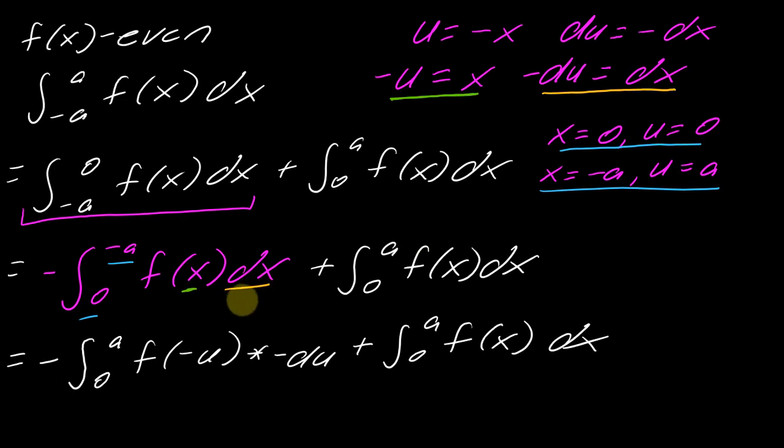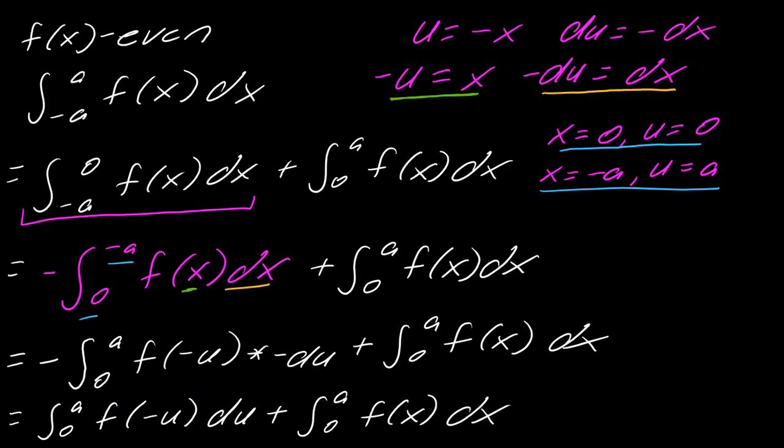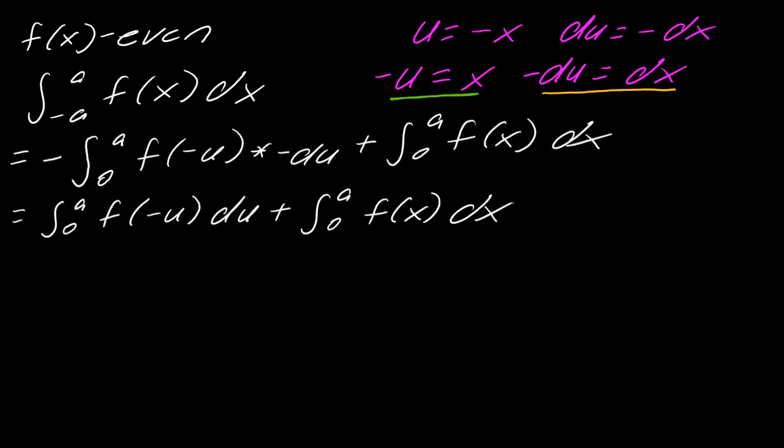I would encourage you to take a second just to sort this out algebraically. Looking at this, these negatives here will cancel out. So this becomes 0 to a f of negative u du plus 0 to a of f(x) dx. And now we can finally leverage the fact that we know that f(x) is even. If f is an even function, this means you get back to the function itself. So let me clear a little bit of space.